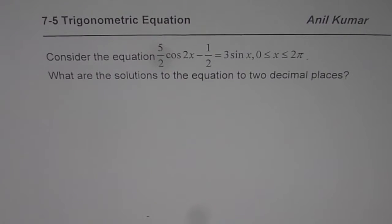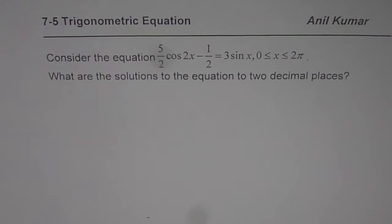I am Anil Kumar, sharing with you an excellent question on trigonometric equations. The question here is: consider the equation 5/2 cos(2x) - 1/2 equals 3sin(x), where x is greater than or equal to 0 and less than or equal to 2π. What are the solutions to the equation to two decimal places?